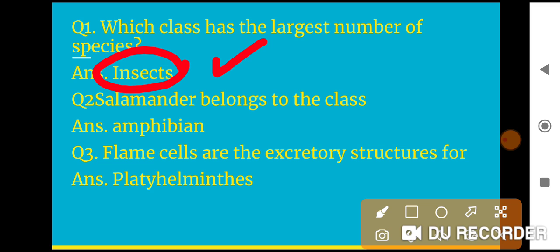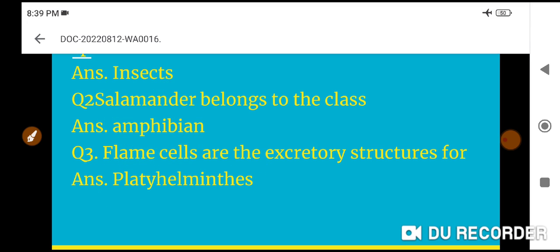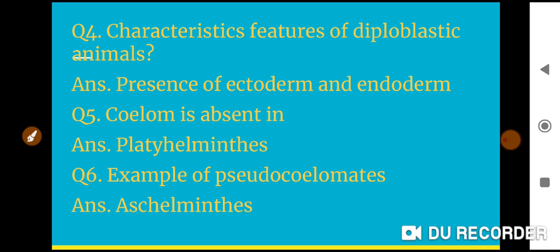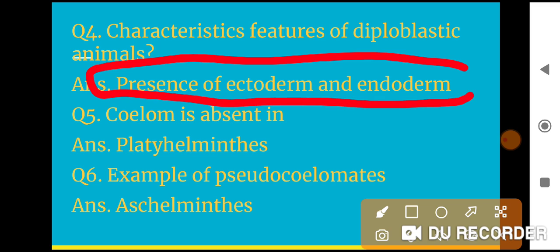Question 3: Flame cells are the excretory structures for Platyhelminthes. Question 4: Characteristic features of diploplastic animals are presence of ectoderm and endoderm. Question 5: Coelom is absent in Platyhelminthes.